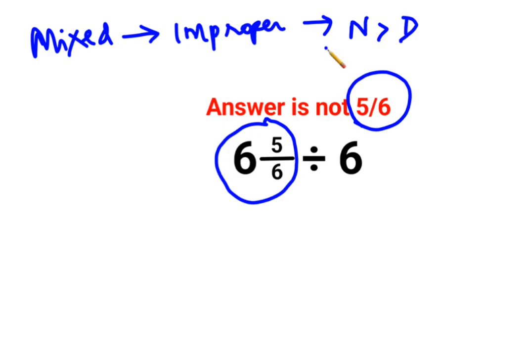Only and only in that case it is called improper and whenever you have an improper fraction, from that you can generate a mixed fraction. Now how do we do this? When you want to convert a mixed fraction into an improper fraction,